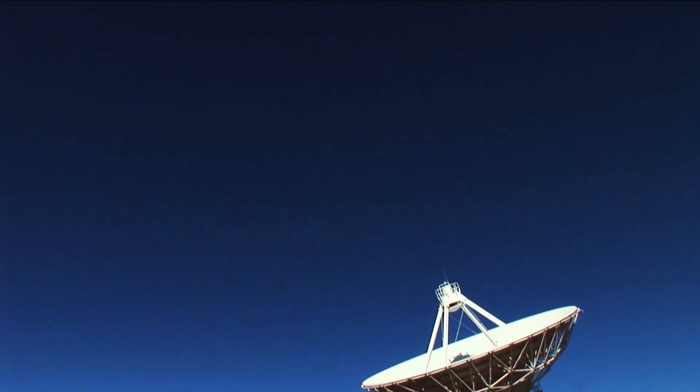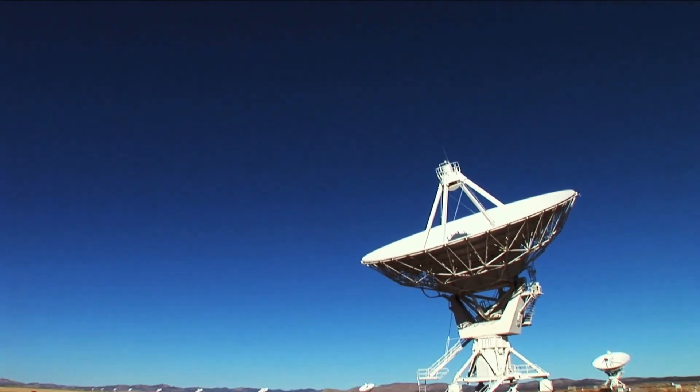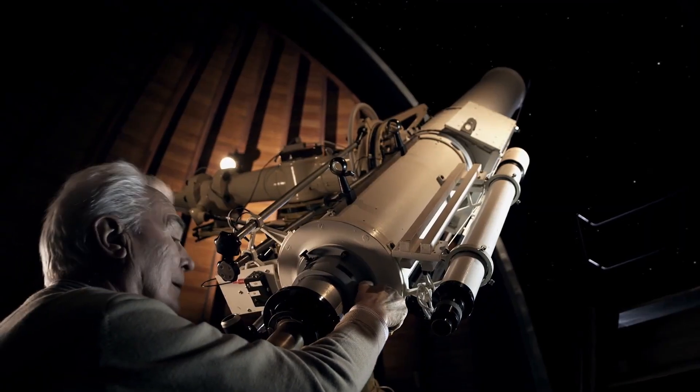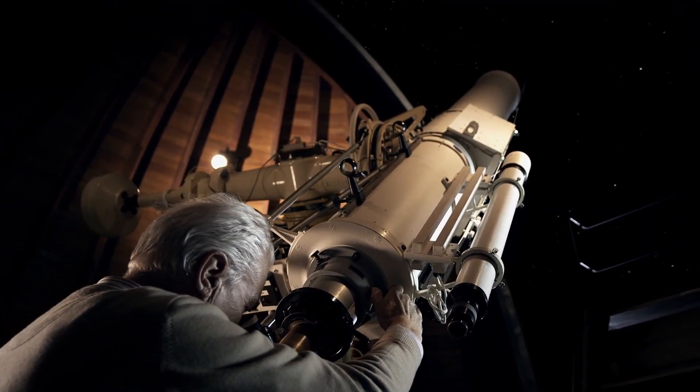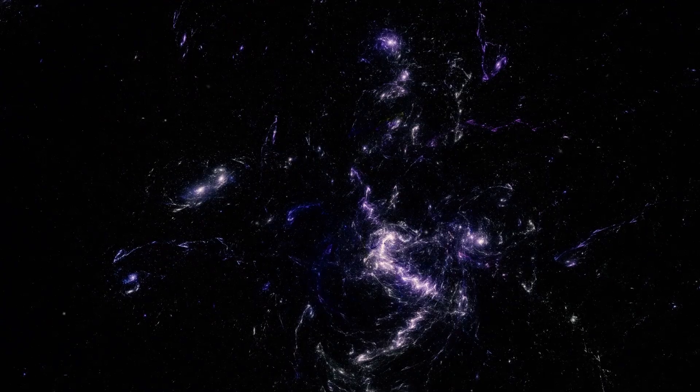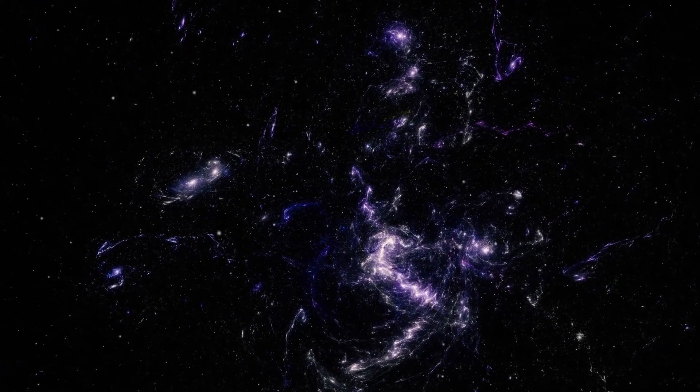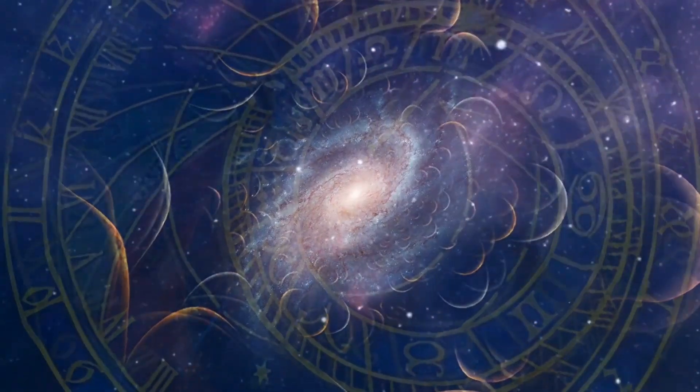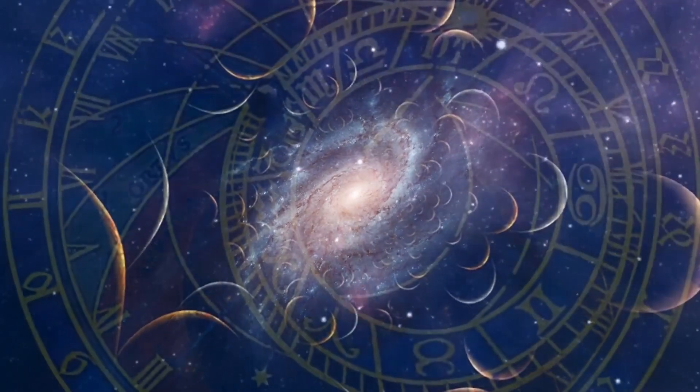Eventually, Betelgeuse will no longer be able to sustain the forces opposing gravity, and it will collapse inward in a catastrophic implosion. This will trigger a supernova, an unimaginably powerful explosion that for a brief period could outshine an entire galaxy.